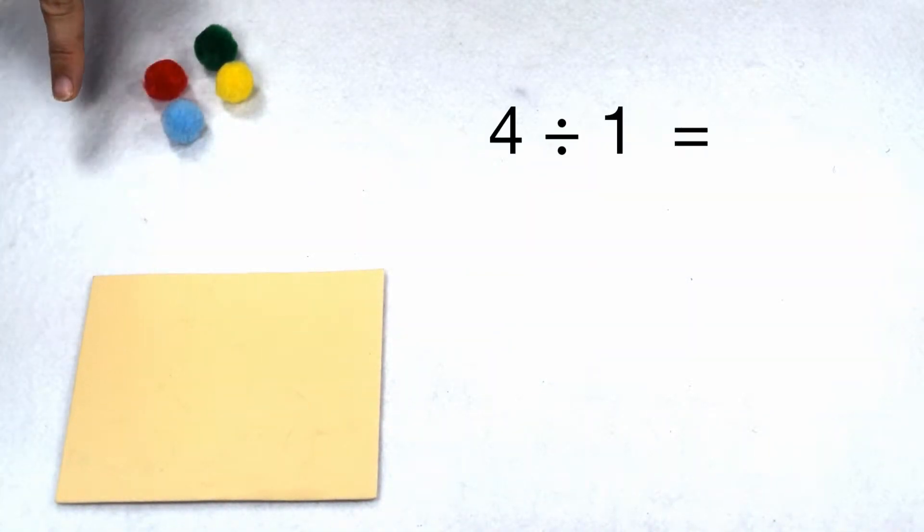Well, let's start with four items. We want to put those into one group. This means four is our dividend and one is our divisor. So we're solving four divided by one.